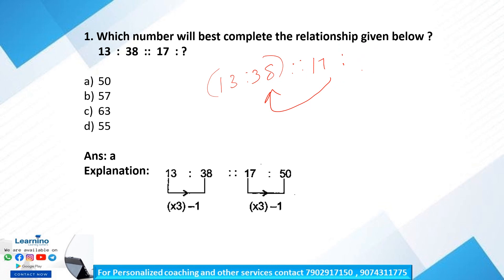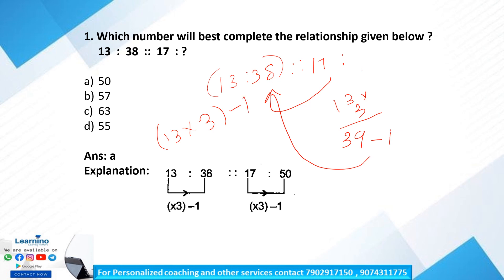Let us find out what the relationship is between 13 and 38. What is 13 × 3? It is 39. So 39 − 1 is 38. They have done 13 × 3 − 1. Doing the same for 17: 17 × 3 is 51, and 51 − 1 is 50. So the answer is option A, 50. The relationship followed here is ×3 − 1.